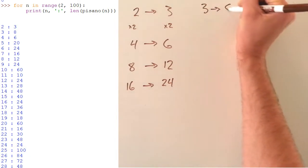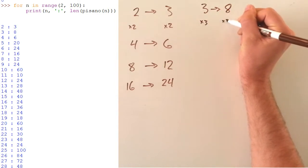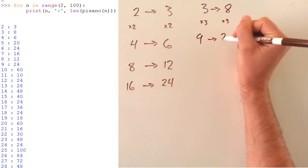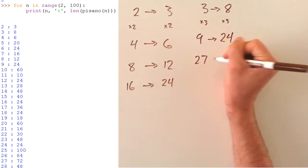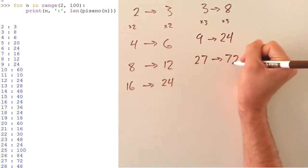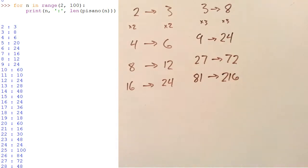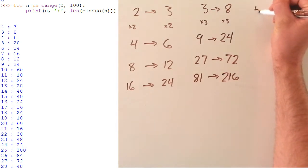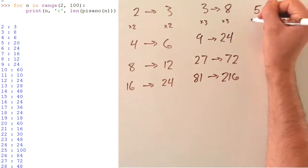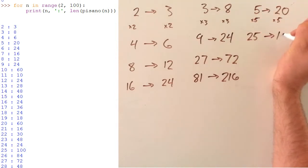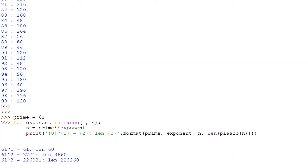3, the next prime after 2, has a length of 8. 9 is 3 times longer with a length of 24. 27 is 3 times longer with 72, and 81 has a period of 216 numbers. Going on, 5 has a length of 20. 25 has 5 times that long a period. I have yet to find a prime where this is not the case.